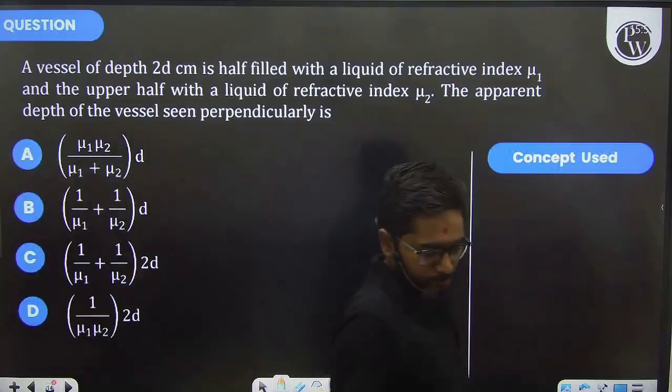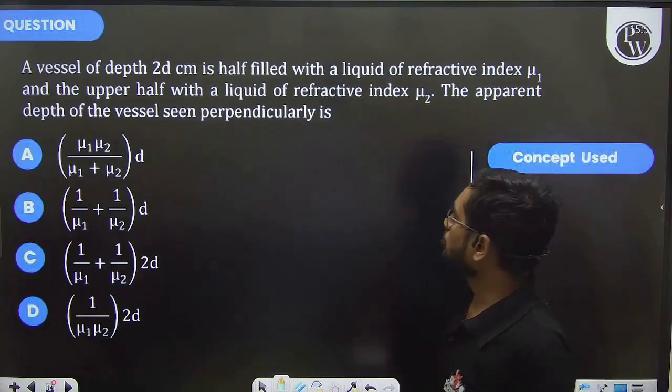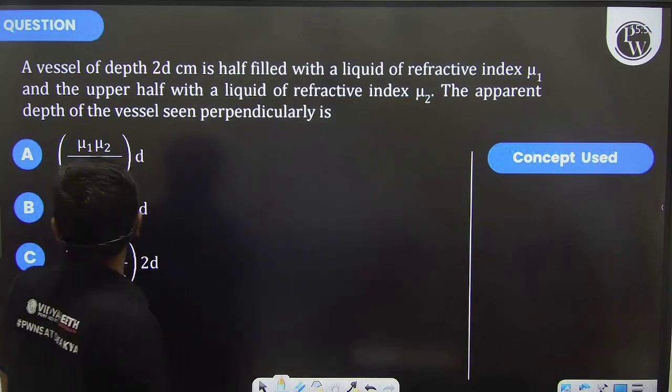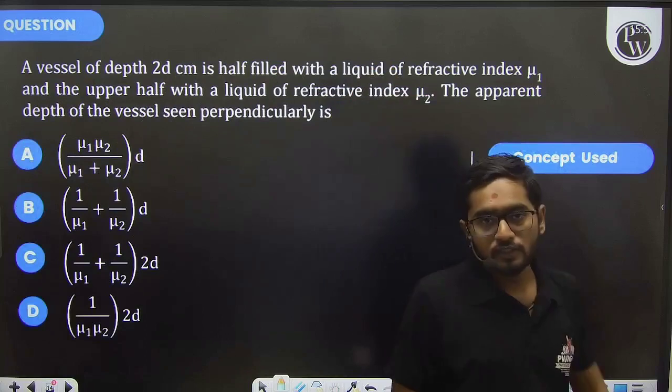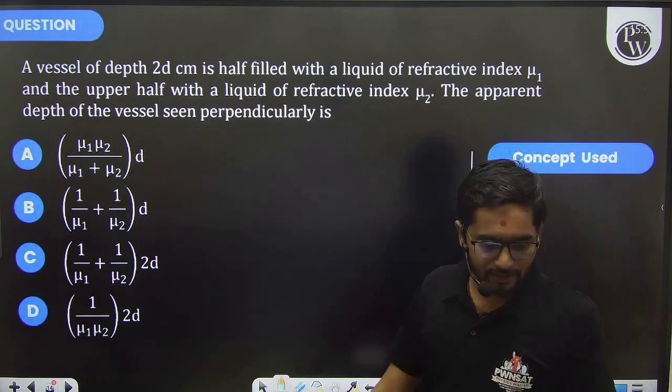We have a new question. In this question, a vessel of depth 2d centimeter is half filled with a liquid of refractive index μ₁ and the upper half with a liquid of refractive index μ₂. The apparent depth of the vessel seen perpendicularly is...